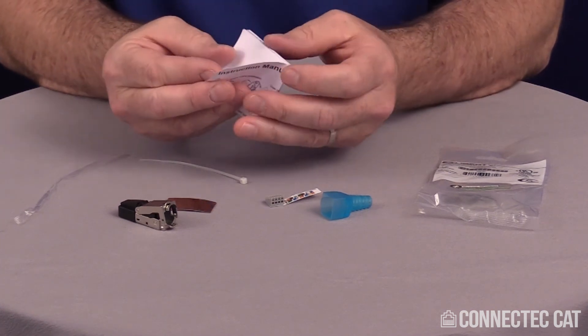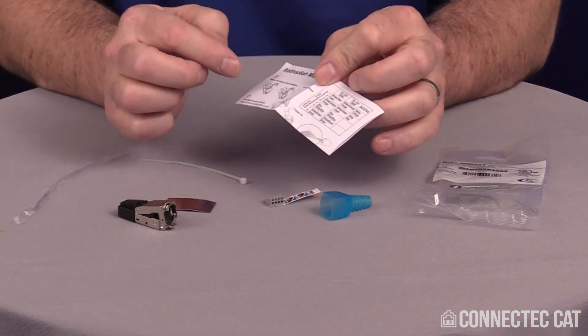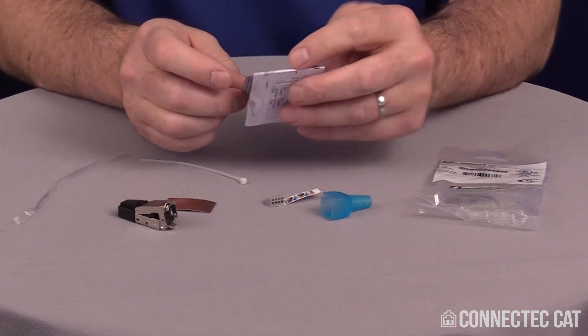The instructions are pretty self-explanatory, but I will demonstrate the termination. One difference I do on the instructions is I do a 2 inch strip versus a 1.2 inch strip. I just like a little bit more to work with.